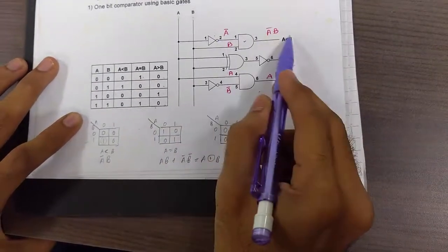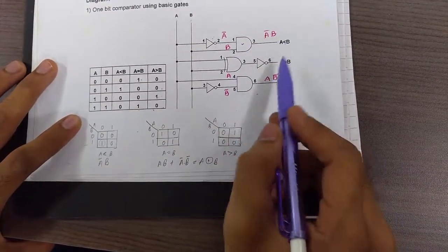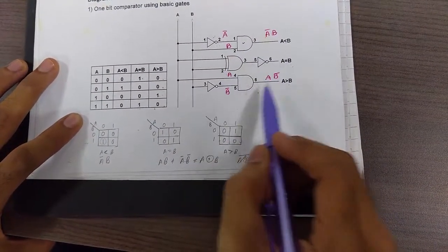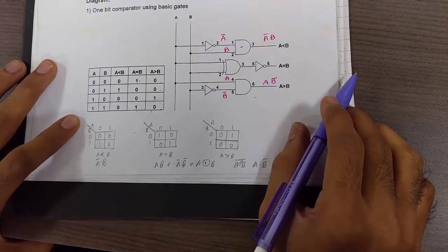This equation has been implemented over here. This is A bar B, this is A XNOR B, and this is A B bar. So now let's just make the connections.